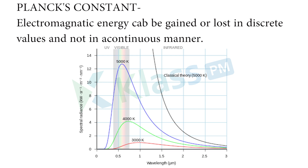What is Planck's theory? Electromagnetic energy can be gained or lost in discrete values, and not in a continuous manner. So only in discrete values can energy be gained or lost in electromagnetic energy. That is Planck's theory.